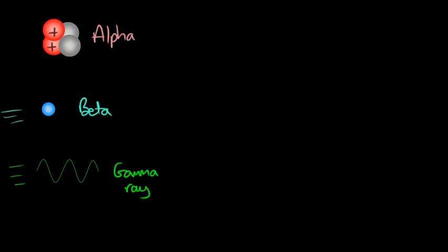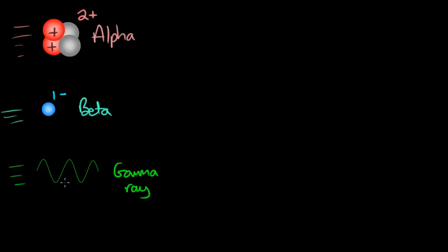All three of these can ionize atoms. An alpha particle, because it has a 2+ charge and two protons and two neutrons, is highly ionizing. A beta particle with its 1- charge is not as ionizing and has a smaller mass than an alpha particle. A gamma ray doesn't have any charge at all, so it's the weakest of the three in terms of ionizing power.